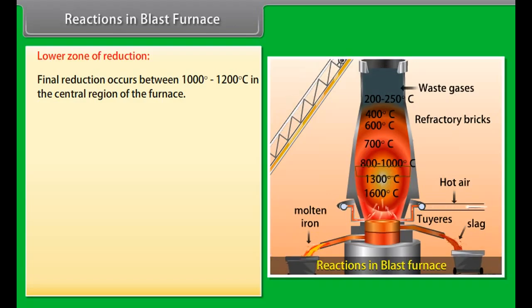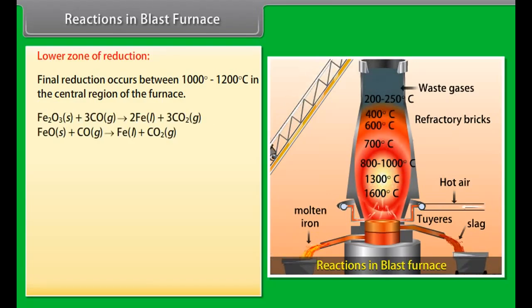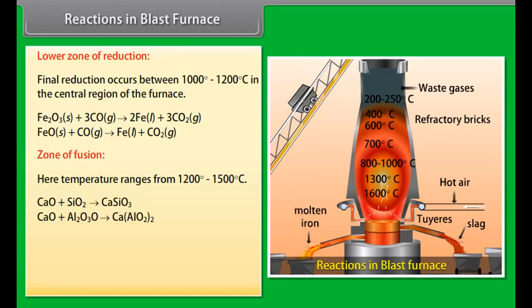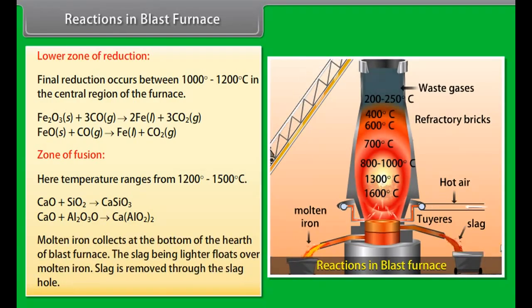Reactions in blast furnace. Blast furnace is a tall chimney-like structure lined with refractory bricks. Dry and hot blast of air is passed from below. As the charge moves down, it passes through higher temperature zones. On the basis of variations in temperature in the different parts of the blast furnace, there are various zones where different chemical changes take place. Combustion zone: This is the lowest part of the furnace. Here, coke burns in hot blast of air. In this region, temperature varies from 1500 degree to 2000 degree Celsius. Carbon dioxide rises upwards and meets with red-hot coke.